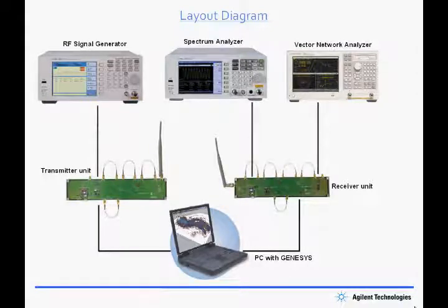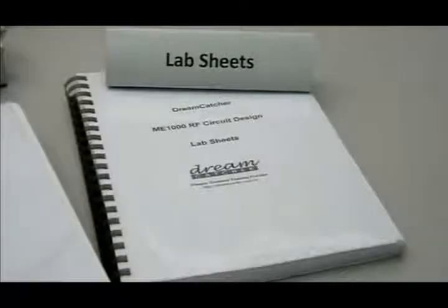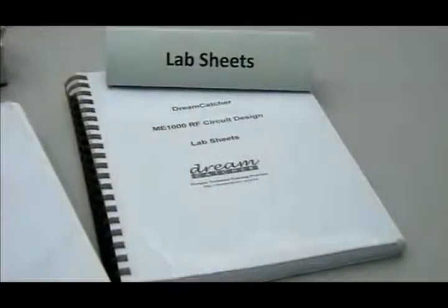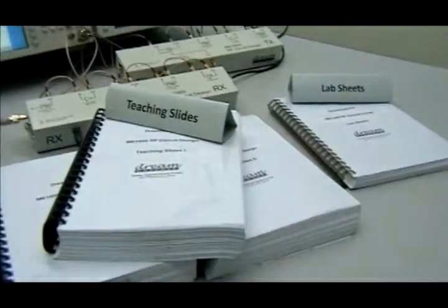The RF signal generator is used as an input signal to our transmitter unit. And the spectrum analyzer and vector network analyzer are to measure the output signals on the receiver unit. Let me show you a brief video that will give you a better idea of how these tools can be used in your classroom.